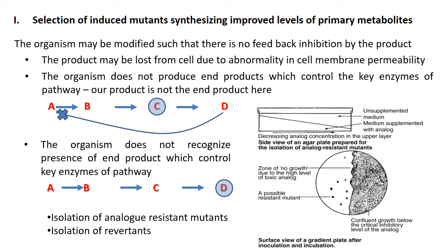An analog is a compound very similar in structure to another compound. Analogs of amino acids, vitamins, nucleotides, etc. are generally growth inhibitory or highly toxic, since they interfere with normal metabolism by mimicking their natural molecule and altering the control mechanisms. Analog resistant mutants are mutants which do not identify or recognize the product or its structural analog as a feedback inhibitor, and as a result the organism will continue to produce the product in high levels without any feedback inhibition.